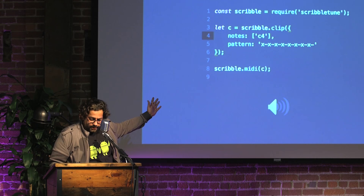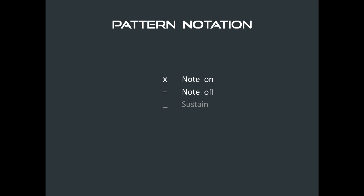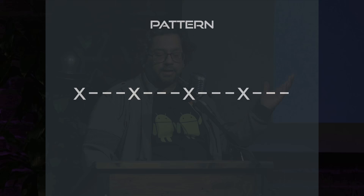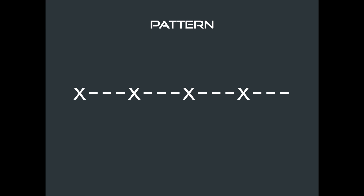Let me tell you a little more about patterns. `x` is note on, hyphen is note off; there's also sustain which I've grayed out for tonight. It's a minimalistic notation to tell ScribbleTune what you want to do with the notes you want to play. So in the earlier example the pattern was `x-x-x-x-x-x-x-x` — 16 characters. If you import that inside a DAW like Reason, the red rectangles signify an `x` and the empty ones signify a hyphen. Here's another pattern: `x---x---x---x---`, a very typical four-by-four kick drum thing that appears in almost every dance track.